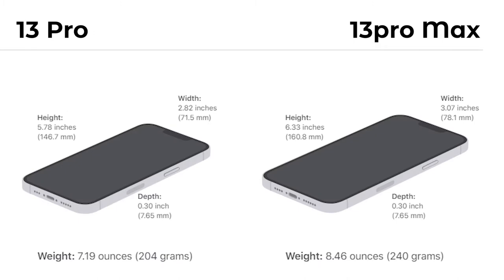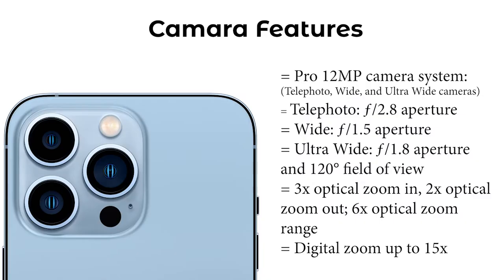The capacity is almost similar and the weight is almost the same — not much difference. If you have a look at the camera, you will find a 12-megapixel camera which has telephoto, wide, and ultra-wide cameras.